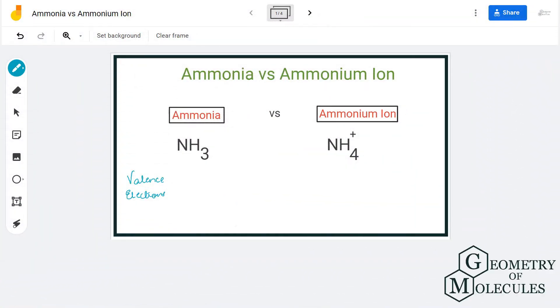Hi guys, welcome back to the channel. Today we're going to learn about the differences between ammonia and ammonium ion. As you can see here, ammonia has the chemical formula NH3, and the chemical formula for ammonium ion is